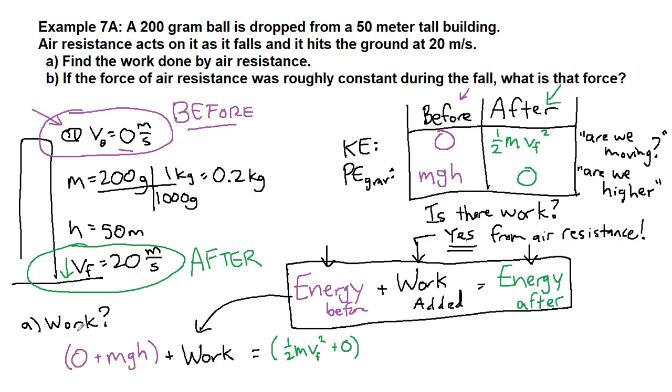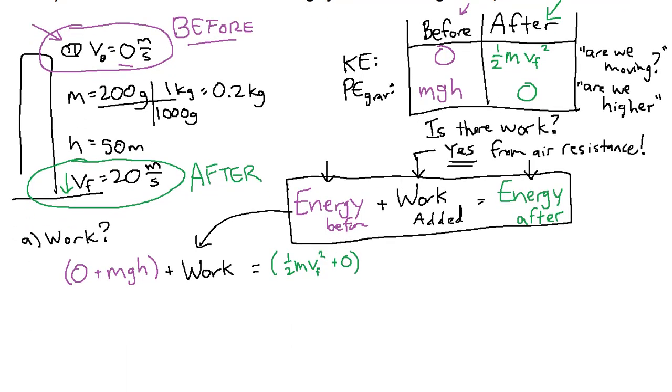Now we can plug in numbers. We have a lot already given to us in this list of terms. Mass was 0.2 kilograms. G is 9.8. It's been that way for the last many chapters. And the height is 50 meters. When we have the work term, we know that's what we're solving for, so we just leave it as our single unknown. This is what we are looking for and solving for in this problem. And then on the right side, we have 1 half times the 0.2 times the 20, that's the final velocity squared, plus 0.